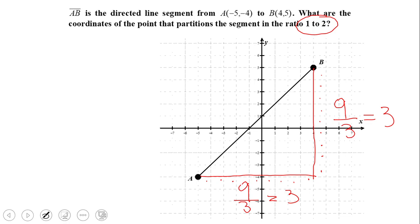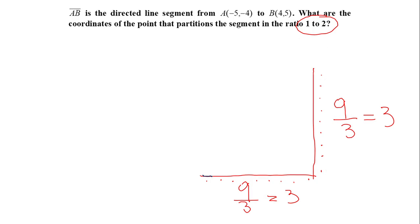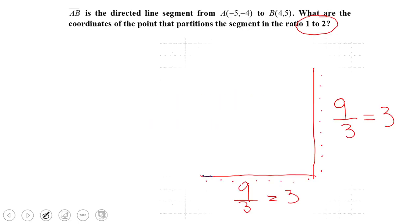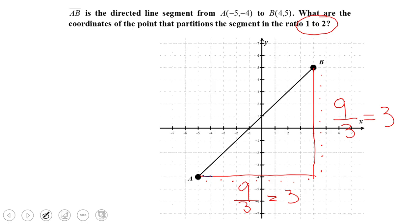So starting at point A, you are going to move horizontally 3 to the right and 3 up. That takes you to that point. And we are going to do the same process from that point: 3 over, 3 up, and 3 over, 3 up until you reach point B.